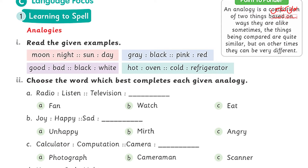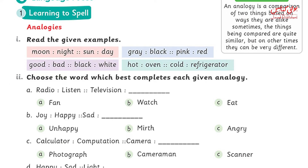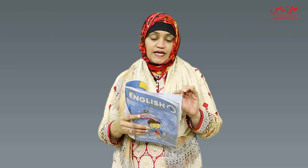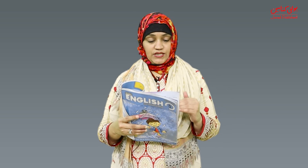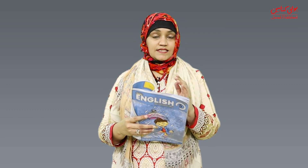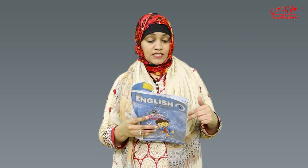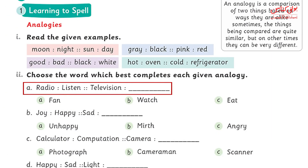Now let's apply this knowledge of comparison to the answers. You have to look at the examples. Moon and night, sun and day. In this analogy, we will learn how to know — moon comes out at night. Now let's do the exercise: radio is to listen, and television is to...